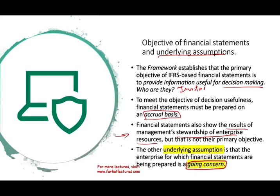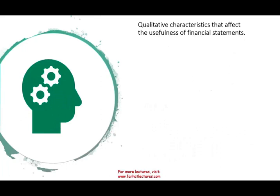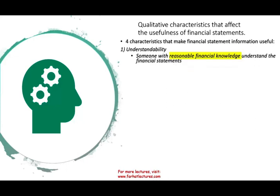The second area is qualitative characteristics. The framework spells out certain characteristics that preparers of financial statements and standard-setting institutions should follow. There are four that make financial statement information useful. First is understandability: when you prepare financial statements, someone with reasonable knowledge of financial information should be able to understand them — for example, understanding that revenues minus expenses equals profit — without needing to hire an expert.